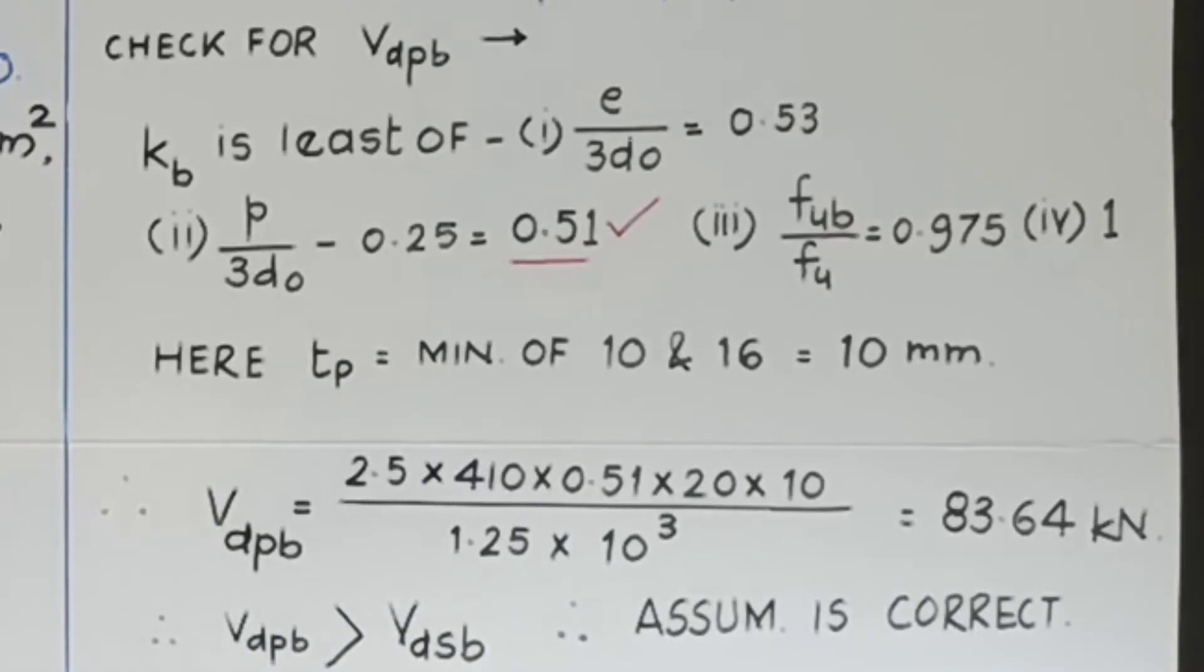Now what is TP? TP is minimum of T1 and T2, that is minimum of 10 and 16, that is 10 mm. Now as usual, calculate VDPB by the formula 2.5 into FU into KB into D into TP upon gamma IMB, that is 2.5 into 410, 0.51, 20, 10, 1.25, and this 10 raised to 3 for converting newton into kilonewton. It comes out to be 83.64 kN.